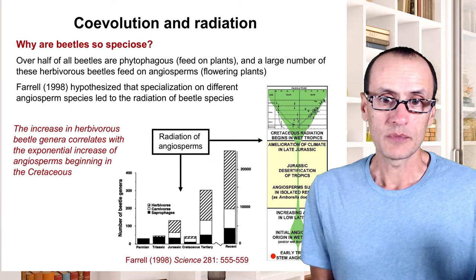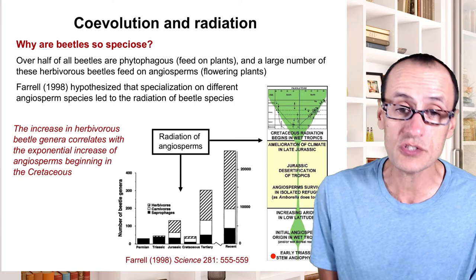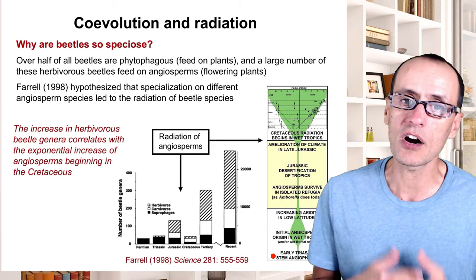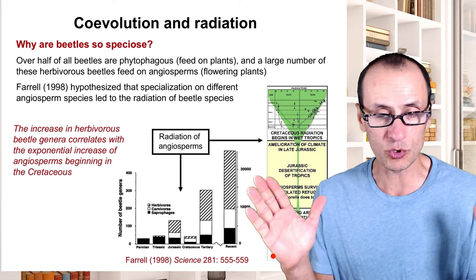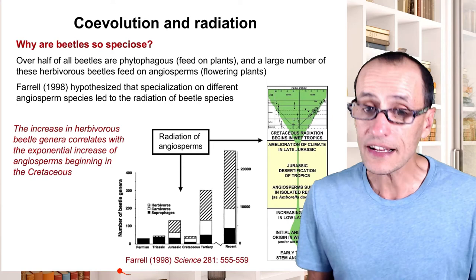Going back to the question of why groups like beetles are so diverse — so speciose — an interesting observation is that over half of the beetles are phytophagous, meaning they feed on plants. And a large number of these herbivorous beetles actually feed on flowering plants, which are themselves the most diverse group of plants.